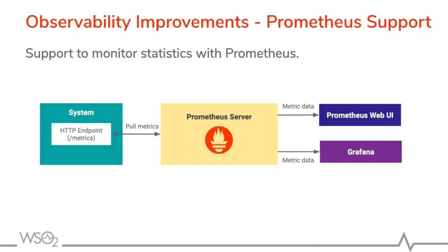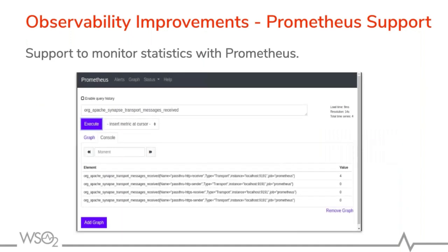We have improved observability by providing the capability of integrating the Enterprise Integrator or Micro Integrator with the Prometheus server. We expose metrics endpoints so that Prometheus can pull the metrics, and you can view the statistics through Grafana, the Prometheus web UI, or however you want. This shows you what you'd see once Prometheus is integrated — such as the number of messages received for APIs and resources.